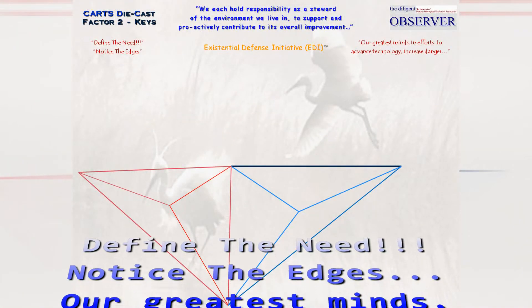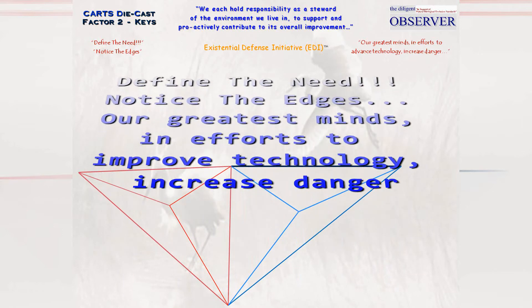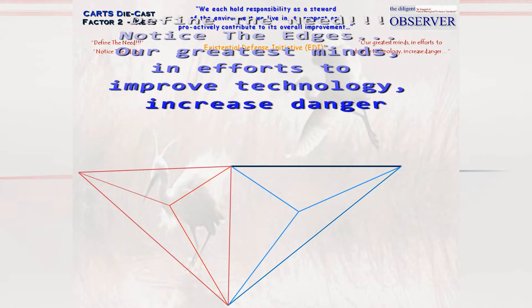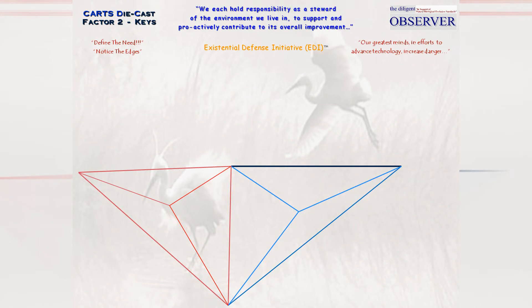CDC F2 Keys. The elements of real estate management, automotive technology, food processing, paper manufacturing, healthcare...